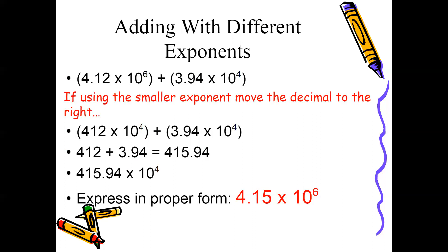Now that my exponents are the same, I can add my coefficients. Keep in mind 412 is a whole number — there's an invisible decimal after the 2 — so align the decimal points and use zeros as placeholders so you have the same number of digits at top and bottom. Adding 412 plus 3.94 gives you 415.94.